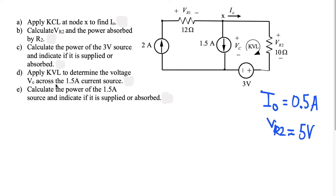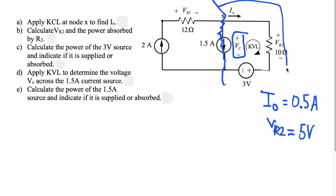Now for part d, we apply KVL. For KVL, the sum of the voltages across a loop must equal zero. They want us to determine the voltage VC across the 1.5 amp current source. To do this, we close off the left side of the circuit and work only on the right side, making a loop and summing all voltages going in a clockwise direction.